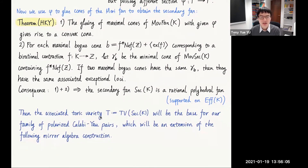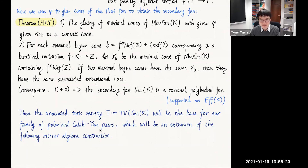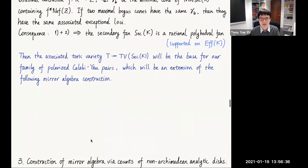We conjecture that when we take the toric variety associated to the secondary fan, it will be the base for our family of polarized Calabi pairs. This family will be constructed as an extension of the mirror algebra construction I did with Sean Keel before. In the remaining few minutes, let me say a few words about how we build the family.